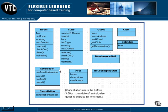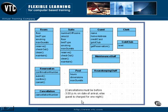We have a reservation class that has attributes such as confirmation number, and operations such as submit, confirm, and cancel. Our cancellation class has a cancellation number attribute, and so on. As you talk to business experts, you'll probably also hear business rules and policies that will help you identify constraints. For example: cancellations must be before 3 p.m. on the date of arrival, or else the guest is charged for one night. You can collect things like constraints and make notes as you start to identify your classes.